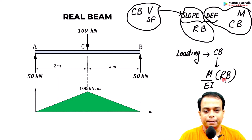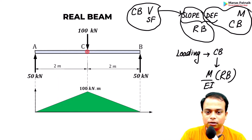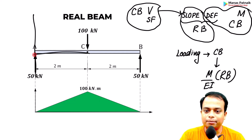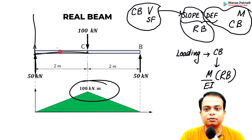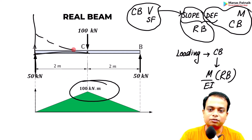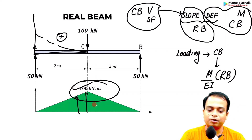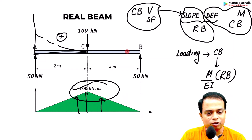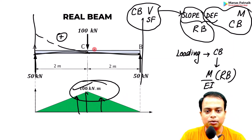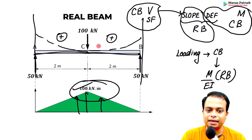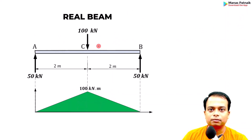The bending moment at C equals 50 multiplied by 2, which is 100 kNm. It is a case of sagging bending moment, which is why it is positive — upward arrows at every point. You can calculate it from either side: 50 multiplied by 2 from the right also gives 100 kNm, sagging. Now let's construct the conjugate beam and put this M diagram — divided by EI — over the beam.